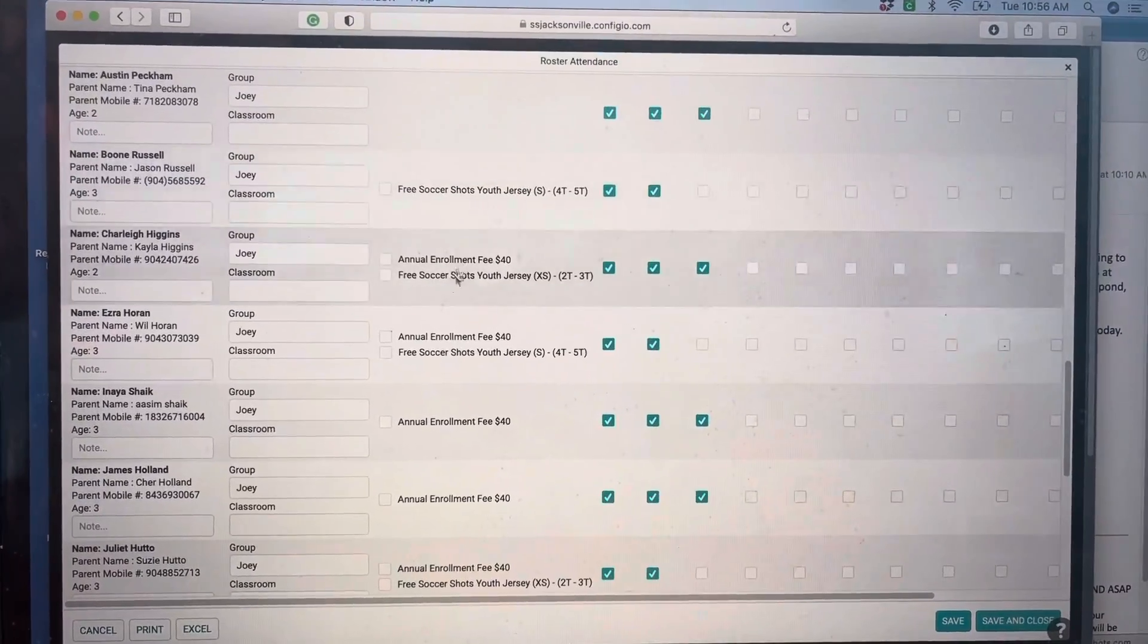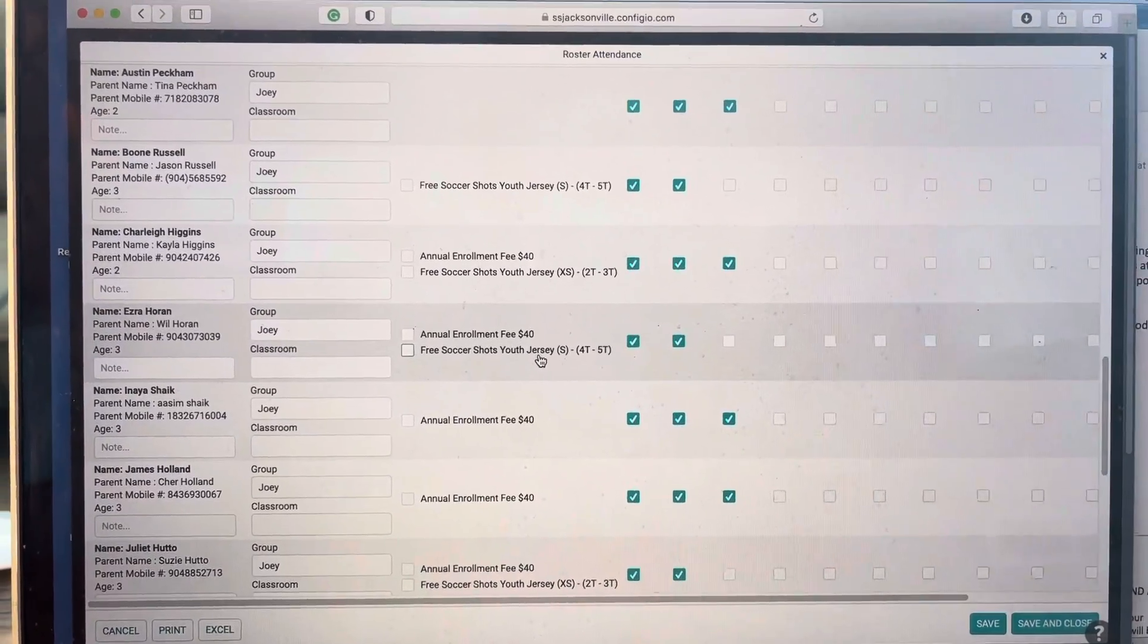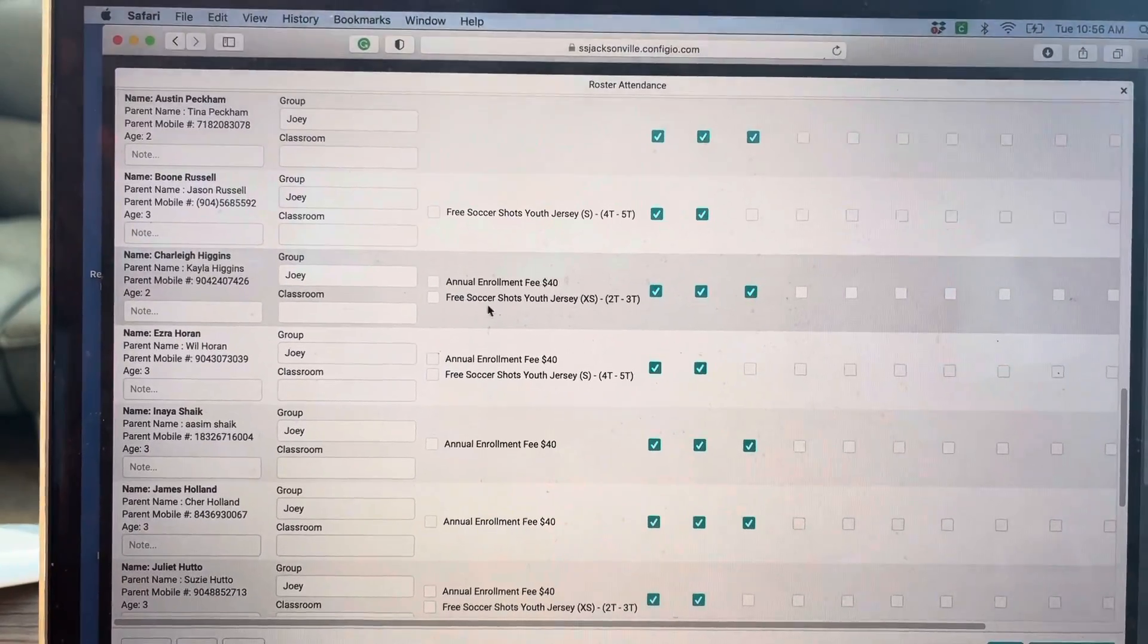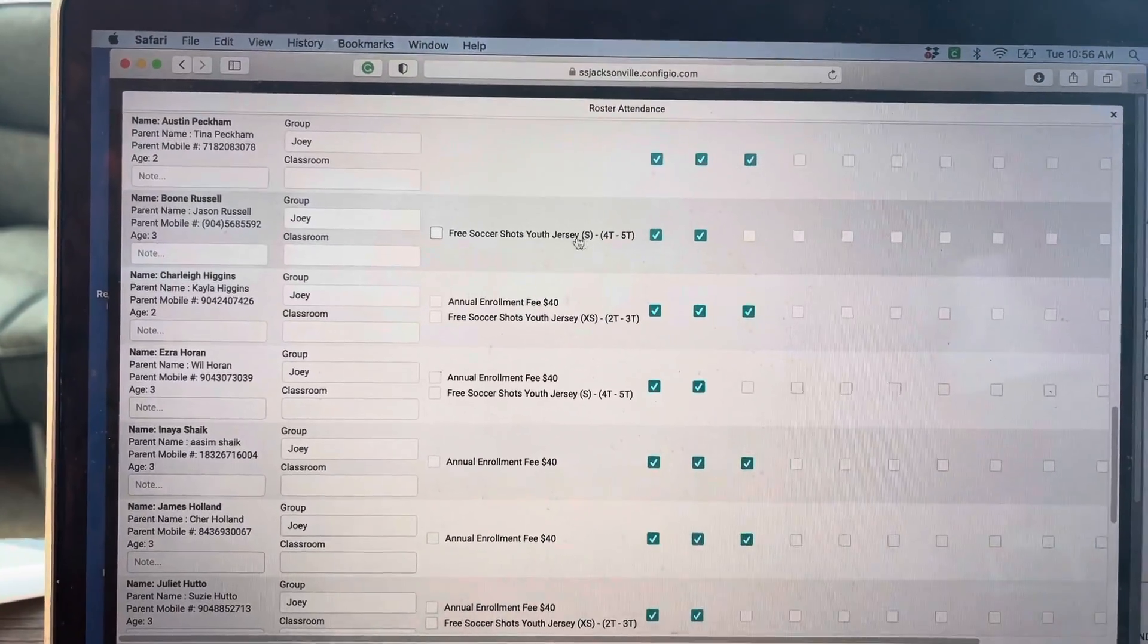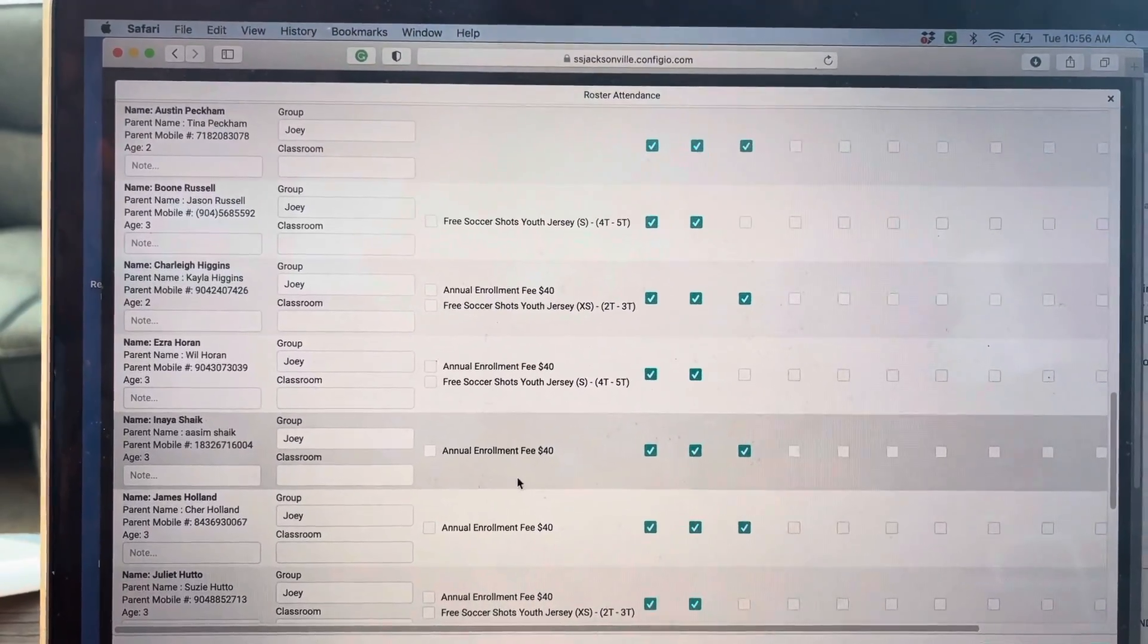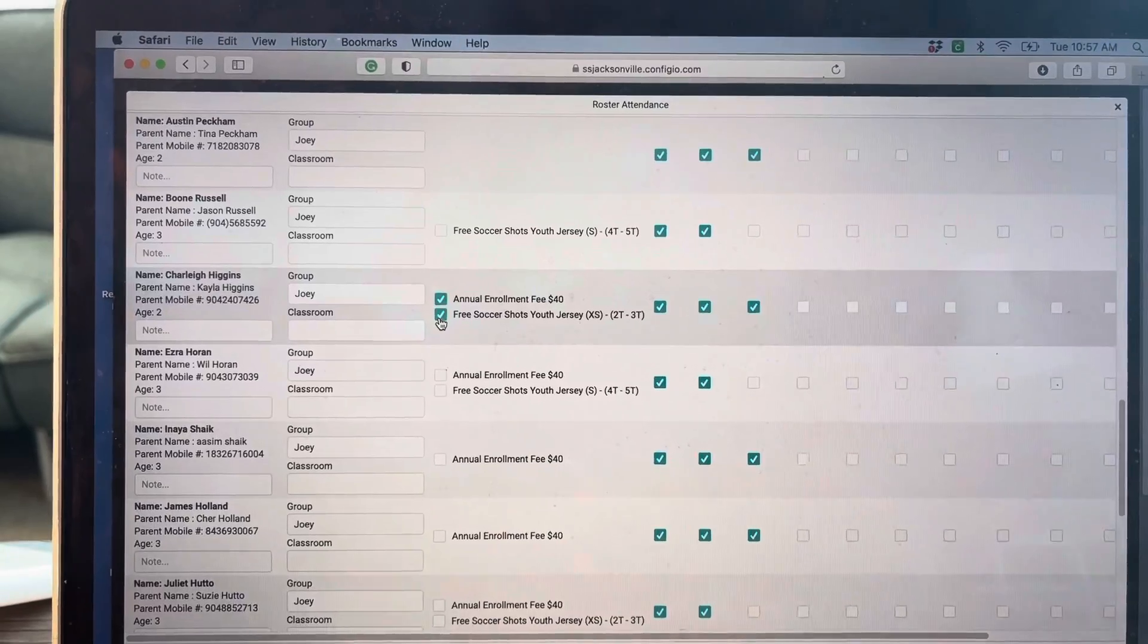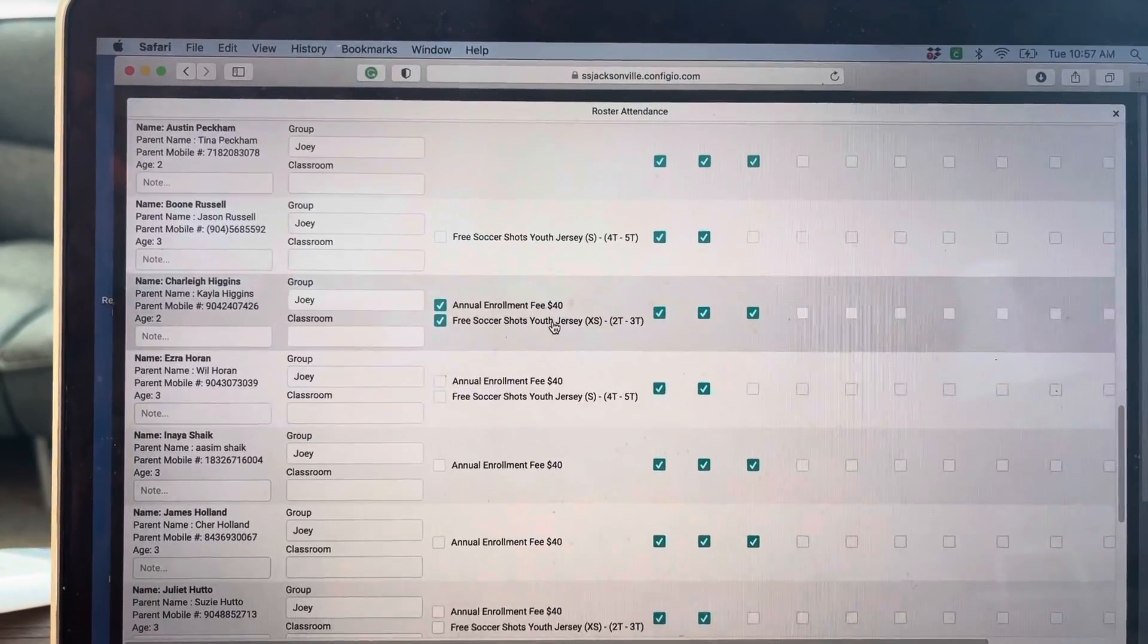To the left here in this middle section at the top it says add-ons - that's what you need to focus on for your jerseys. There's three different things you'll see: a player that has the annual enrollment fee $40 and free Soccer Shots Youth jersey with the size; one that just has the free Soccer Shots Youth jersey with the size; and some that just have annual enrollment fee $40. Let me show you what to do for each one.